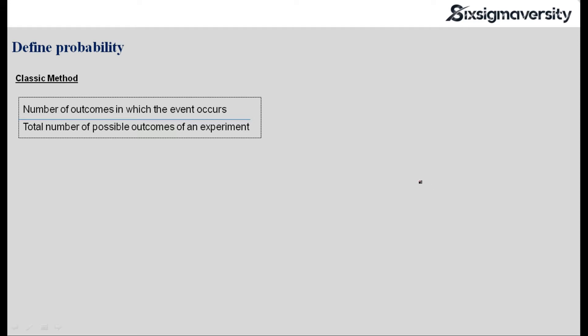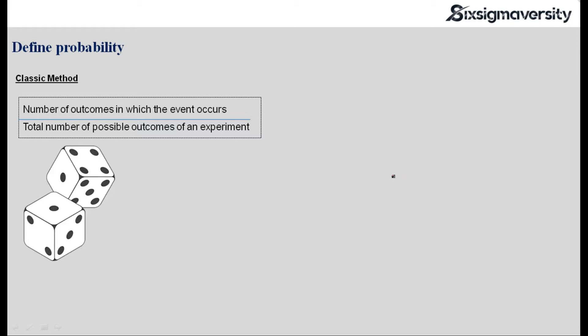So let's get back to the classic method. The classic method is the number of outcomes in which the event occurs divided by the total number of possible outcomes of an experiment. Let me take a simple example of rolling a dice. You must have definitely played multiple games like snakes and ladders where you roll a dice and the dice can give you multiple outcomes — either one, two, three, four, five, or six. There are six different sides to each dice. So if I want to understand the probability of getting one as the outcome when I roll the dice, the probability is one out of six.